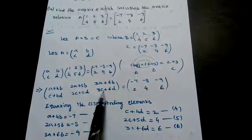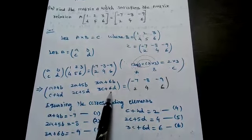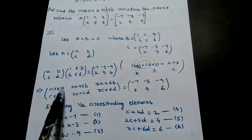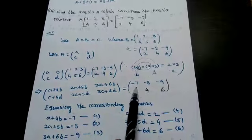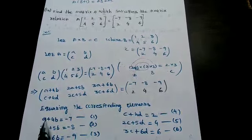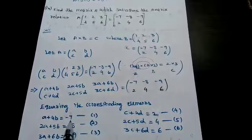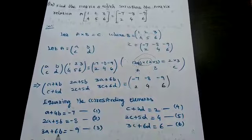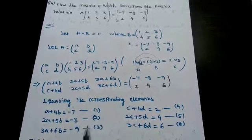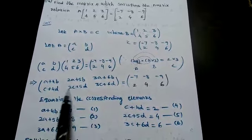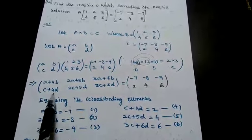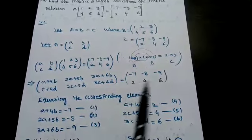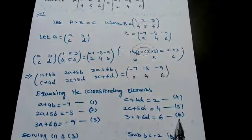Since these two matrices are equal, we equate corresponding elements. From the first row: a+4b = -7 (eq. 1), 2a+5b = -8 (eq. 2), 3a+6b = -9 (eq. 3). From the second row: c+4d = 2 (eq. 4), 2c+5d = 4 (eq. 5), 3c+6d = 6 (eq. 6).